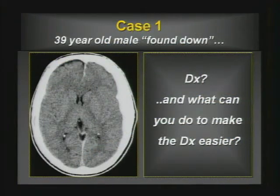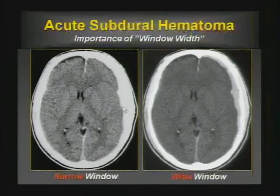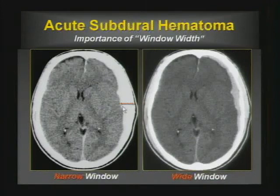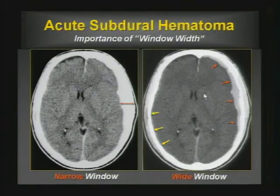Case one: sky's found down, you have a CT. What's the diagnosis? You simply widen the window. Looking at a narrow window width, you see the skull appears thicker on one side than the other. You're looking for evidence of scalp injury showing the patient hit their head — that's the coup site. And then in the contra-coup site, that's where the vast majority of injury happens, and that's a subdural hematoma.